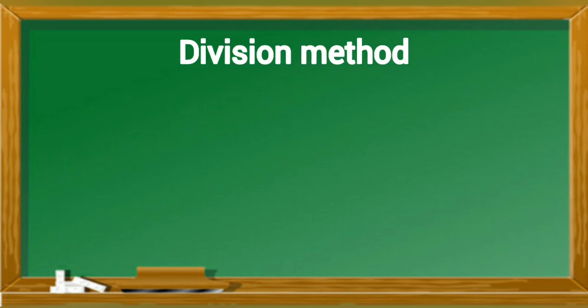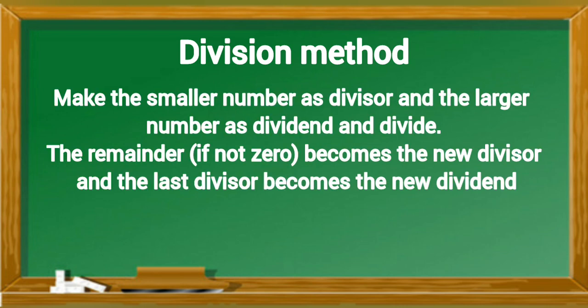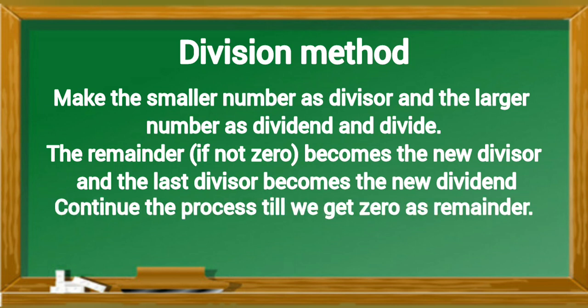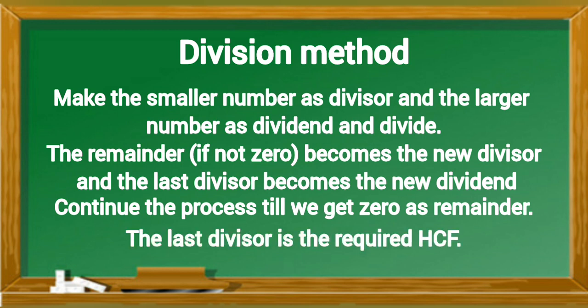To find HCF using division method: Make the smaller number as divisor and the larger number as dividend and divide. The remainder, if not 0, becomes the new divisor and the last divisor becomes the new dividend. Continue the process till we get 0 as remainder. The last divisor is the required HCF.